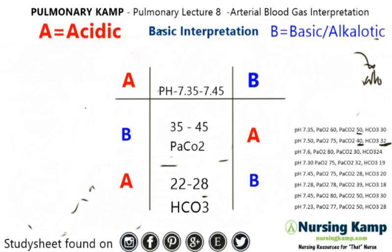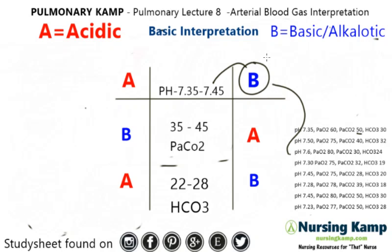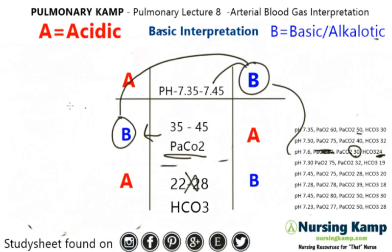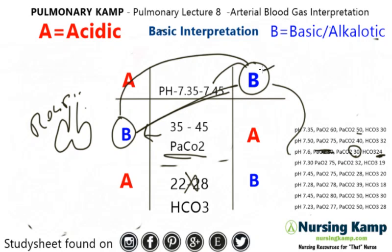Next one — pH is 7.60. Once again it's greater than 7.45, so we circle the basic side. Don't worry about the PO2, we'll talk about that later. PACO2 is 30, so it's less than normal — we circle that one. The bicarb is 20, it's in there somewhere. We match the two letters together: PACO2 is the lungs, so it's respiratory. Both are basic, so we have respiratory alkalosis.